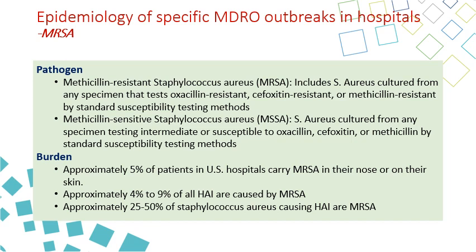For the burden, 5% of patients carry MRSA in their nose or other body parts as colonization, and they can transmit it to other patients or become infected rather than colonized. Up to 9% of all HAI in the hospital are caused by MRSA. 25% to 50% of Staph aureus are MRSA depending on the country — in Saudi Arabia between 25–30%, in the US between 45–50%.